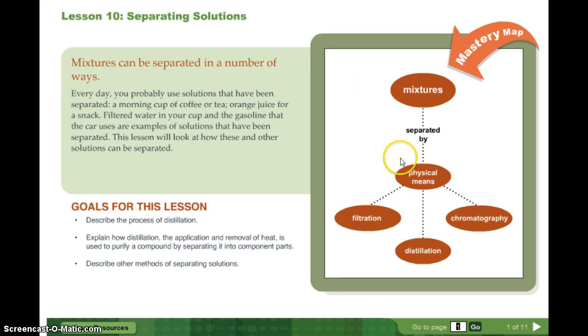Mixtures can be separated by physical means. So physical versus chemical. Remember, chemically changing something means you create a new substance. Physically separating something basically means you pick apart the pieces. You can do that by filtration, distillation, chromatography.